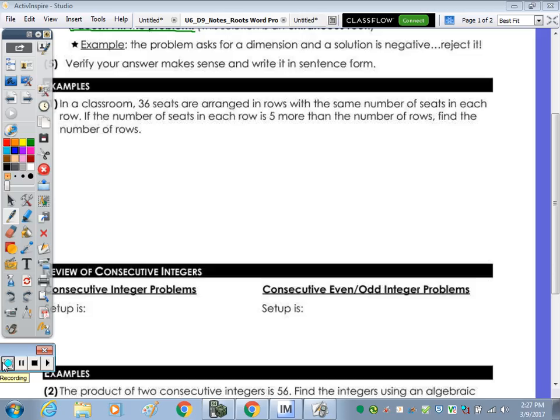So it says, in this classroom you have 36 seats arranged in rows with the same number of seats in each row. I want you to underline this sentence here. This is the sentence that you'll use to write your let statements. The number of seats in each row is five more than the number of rows. Do you know the number of rows that you have? No. So let's let X equal the number of rows.